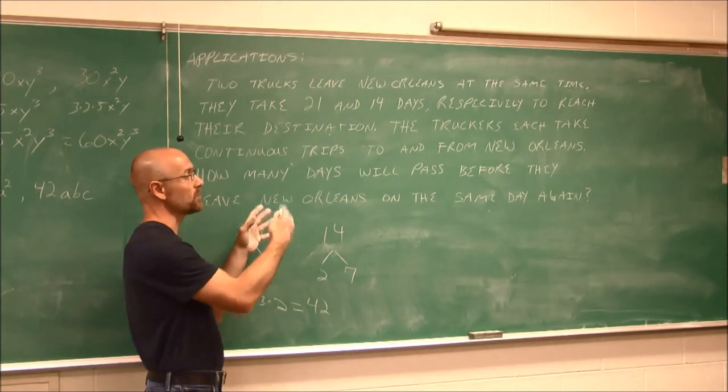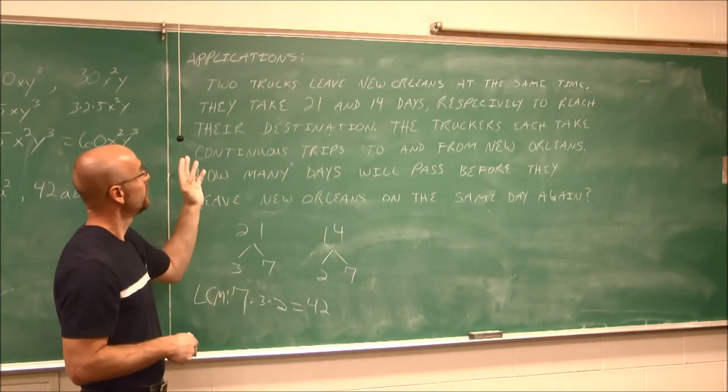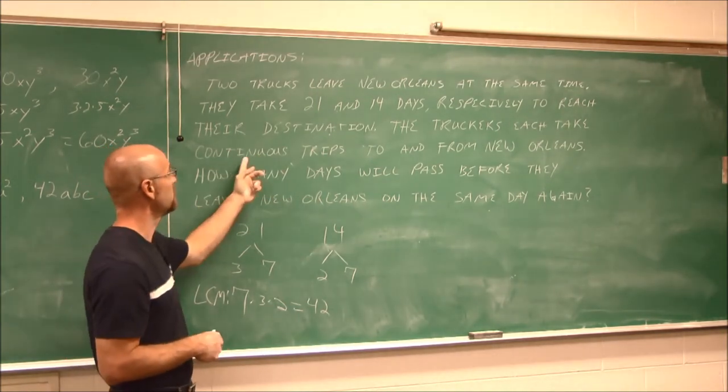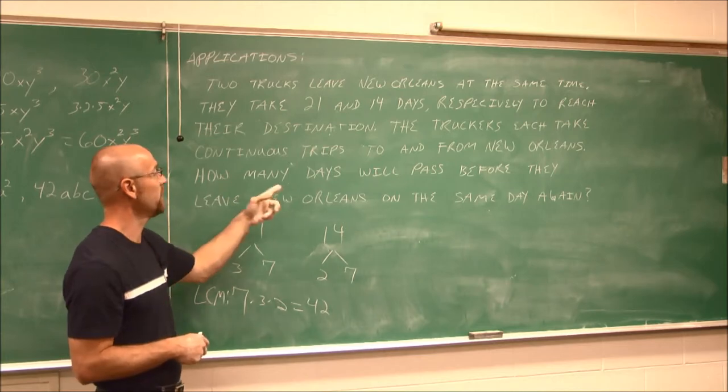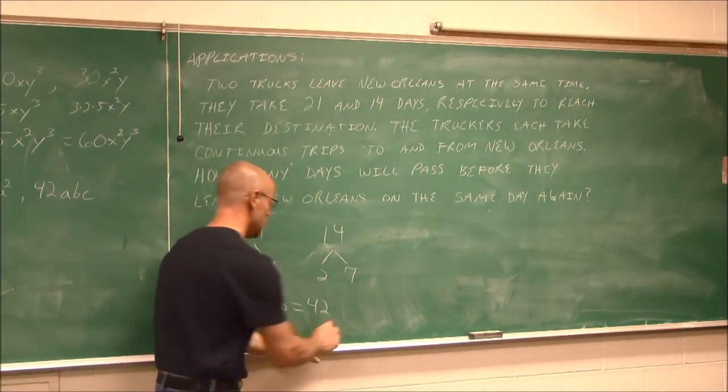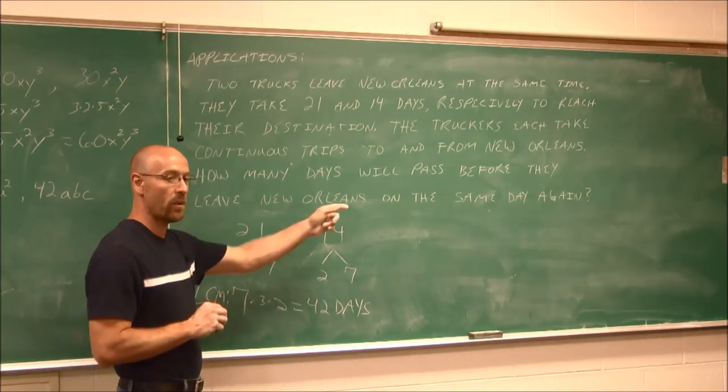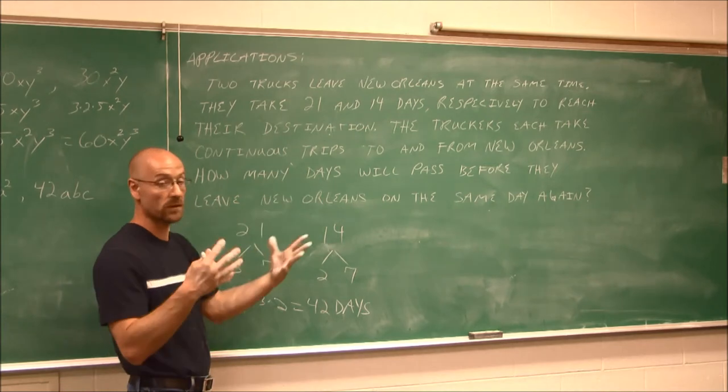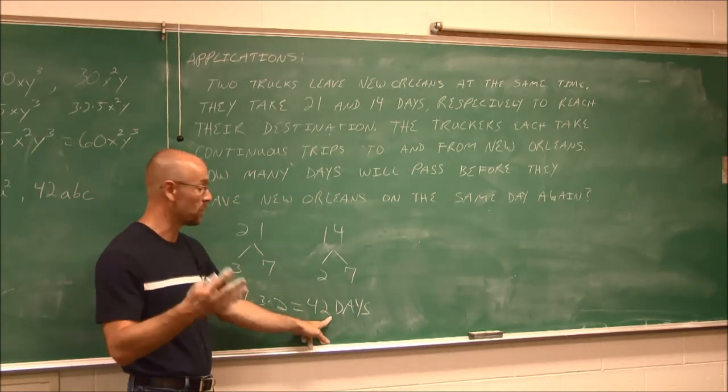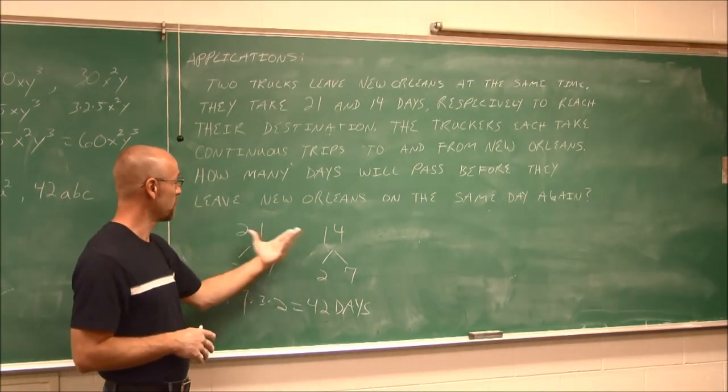What does this mean in terms of the problem? Let's read it again. 2 trucks leave New Orleans at the same time, on the same day. They take 21 and 14 days, respectively, to reach their destination. The trucks each take continuous trips to and from New Orleans. How many days will pass before they leave New Orleans on the same day? How many days passed? 42 days. So if they left New Orleans today, and they go back and forth at different times, 21 and 14, different times, in 42 days, they will be back in New Orleans to leave the shipping yard or whatever it may be at the same time.